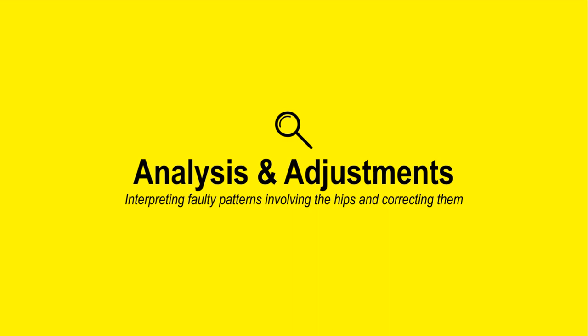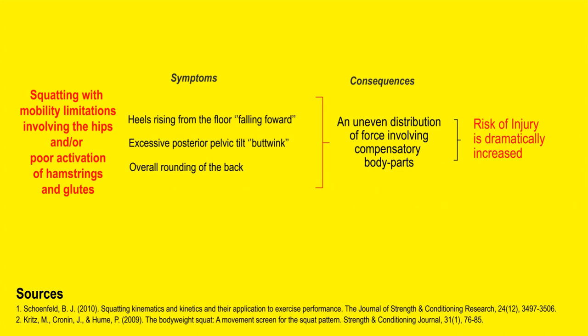What happens when you lack necessary hip mobility or stability of the musculature surrounding the hip? One compensatory mechanism is lumbar flexion at the bottom — the butt wink — similar to previous points. Because you can't move about your hips when you descend and ascend a squat, you're going to overcompensate at the back, it's going to round, and your heels are going to rise from the ground. It is rarely one specific thing that gets affected — it's a cascade of different things. All of those factors will lead to force being concentrated at one specific point of the body and risk of injury is dramatically increased.